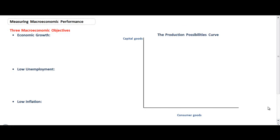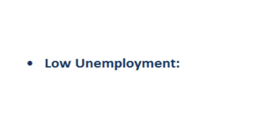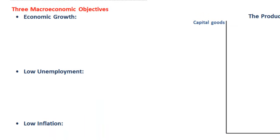There are three main macroeconomic objectives that macroeconomic policy makers are always aiming to achieve. These are economic growth, low unemployment, and low and stable inflation. Let's begin with definitions of these three macroeconomic goals before we show how they can be calculated and illustrated on a production possibilities diagram.